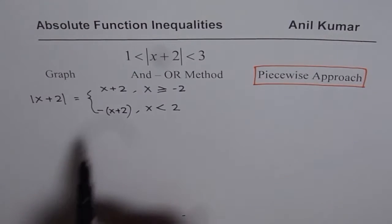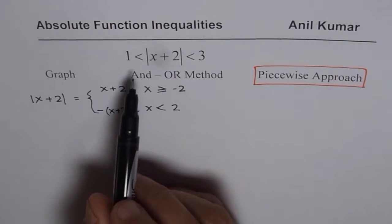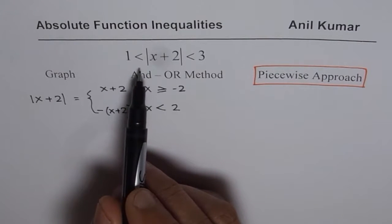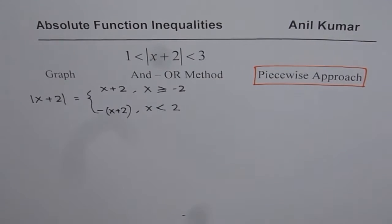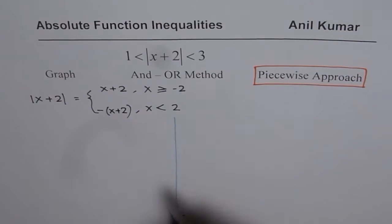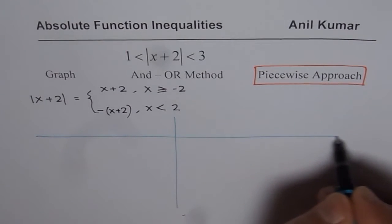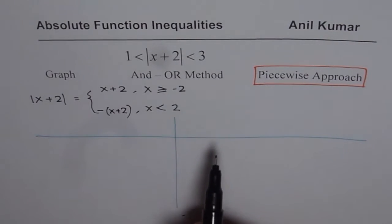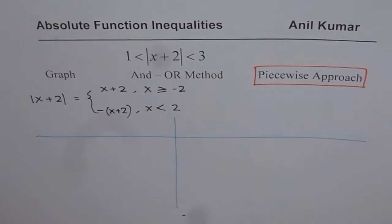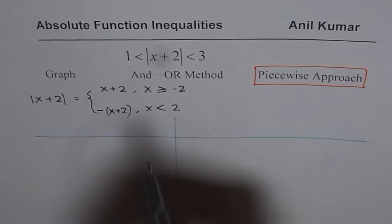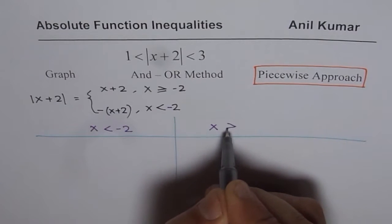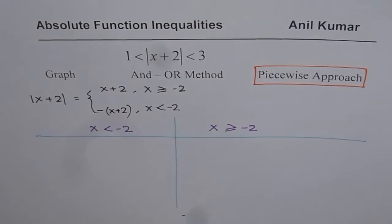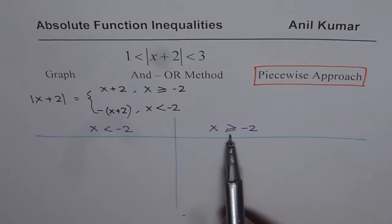The inequality we have — 1 is less than the absolute value of x plus 2, which is less than 3 — can be written as a combination of two pieces. We will try to find the solution in two different intervals: one where x is less than minus 2, and the other when x is greater than or equal to minus 2. Normally we put the equal sign with the greater than side.